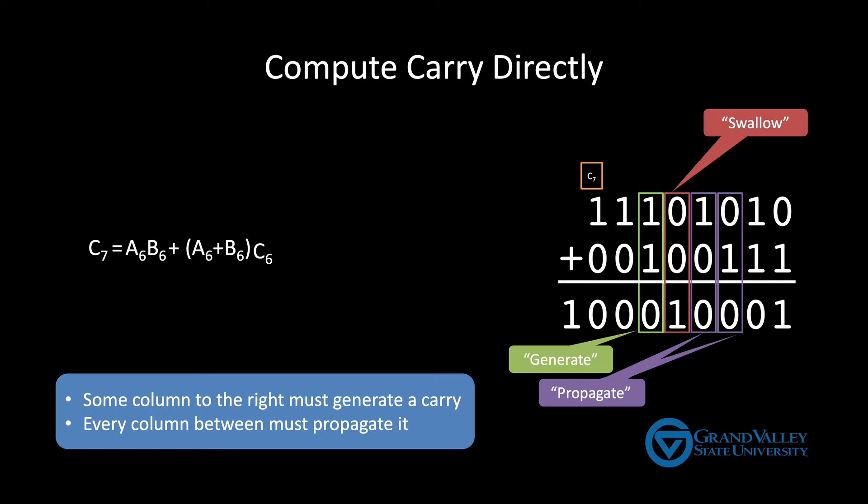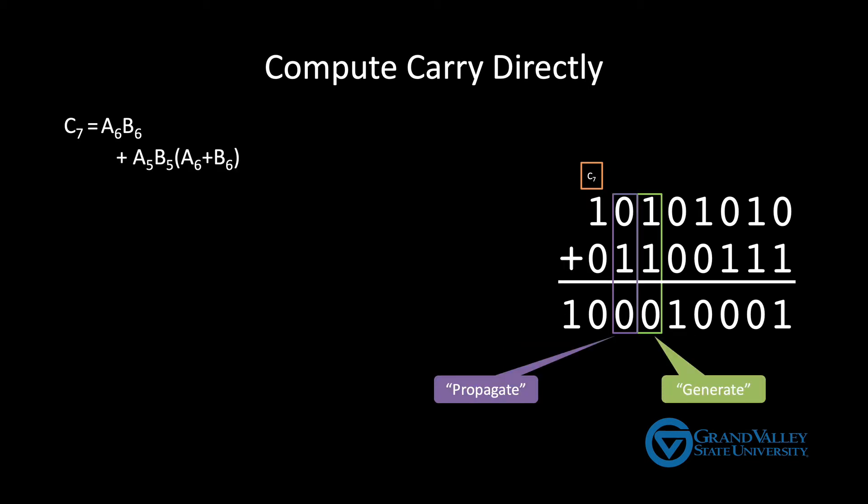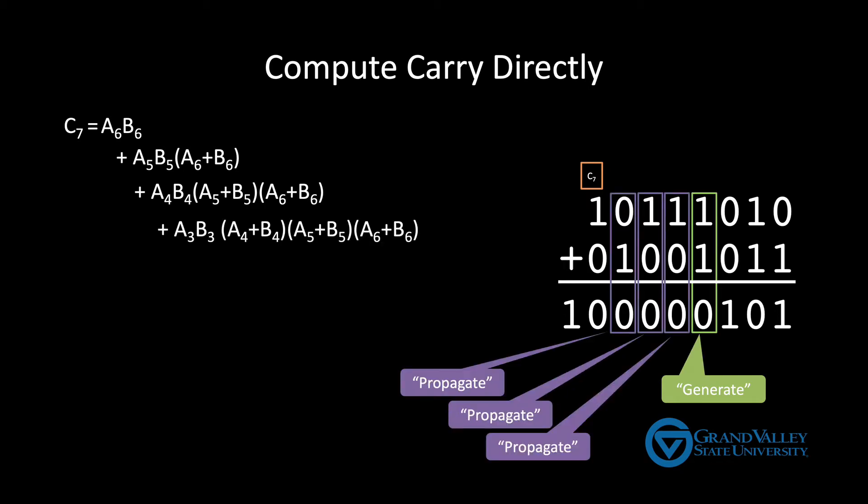So as we already saw, there's a carry into column seven if column six generates a carry. There's also a carry into column seven if column five generates the carry and column six propagates it. Similarly, we could have column four generate the carry and columns five and six propagate it. If we continue this pattern, we get this formula, which is certainly not easy to follow.